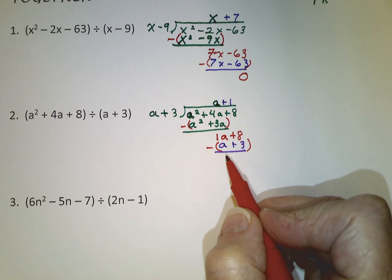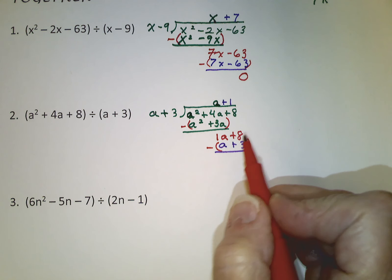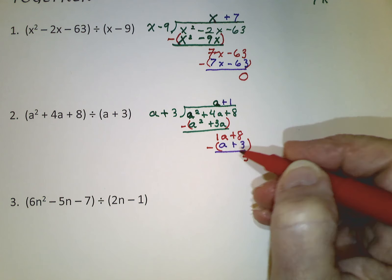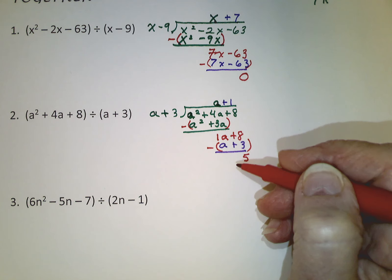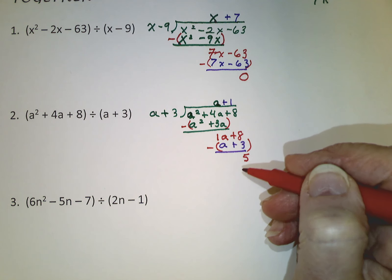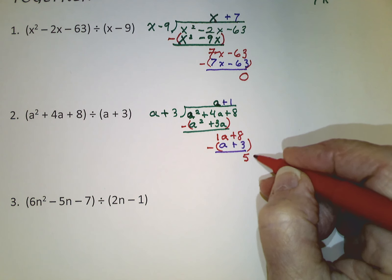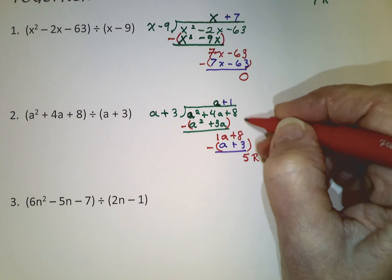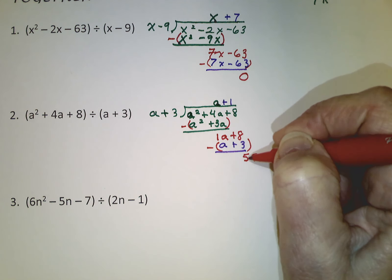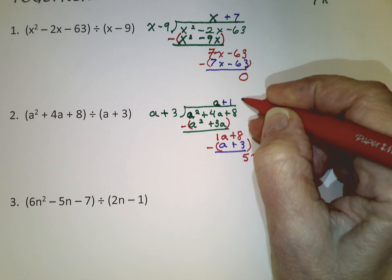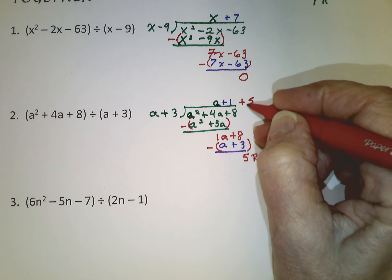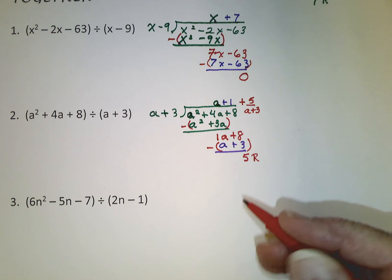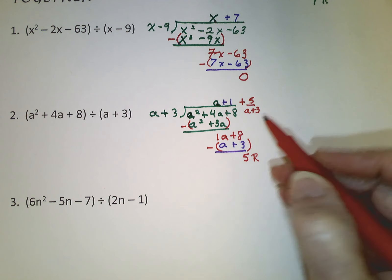Now what do we multiply times a to get 1a? It's a positive 1. That 1 gets multiplied times the whole divisor: 1 times a and 1 times 3. Then we subtract both. The a's cancel out and 8 subtract 3 is 5. Since there was a remainder, a plus 3 is not a factor, and neither is a plus 1. We write the remainder as a fraction: plus 5 over (a plus 3), and that entire expression is our quotient.